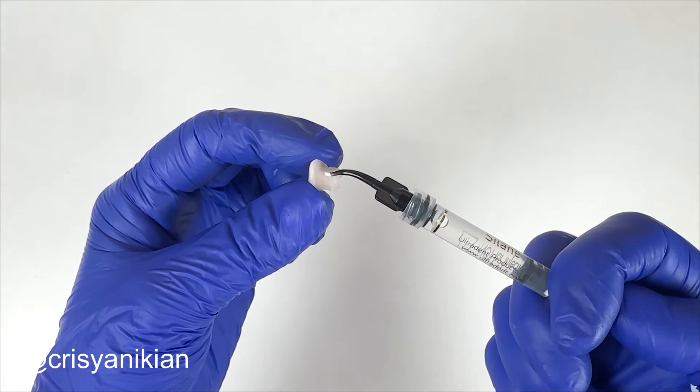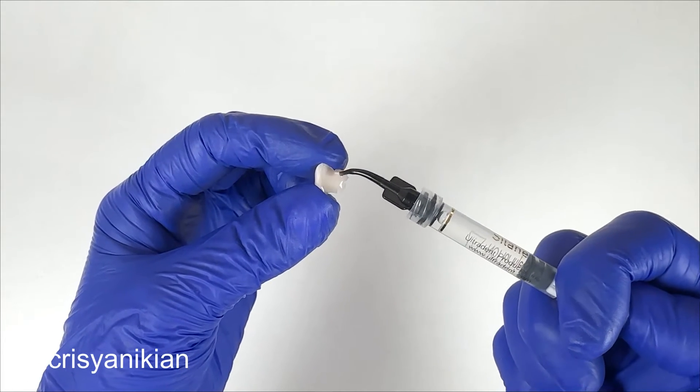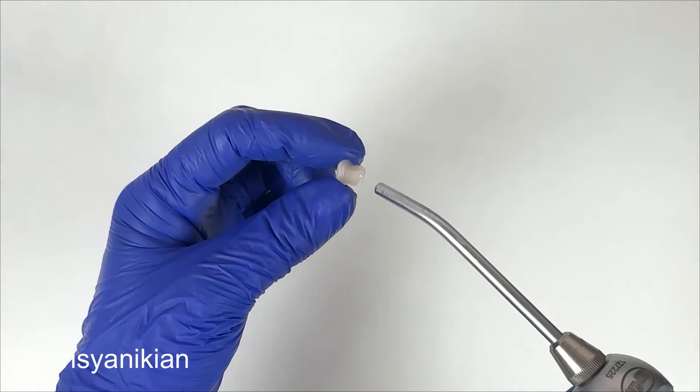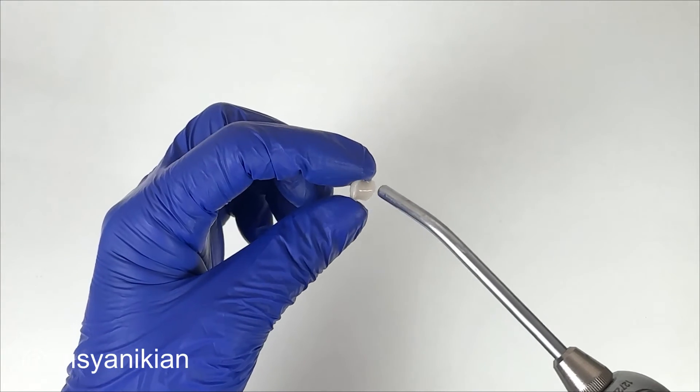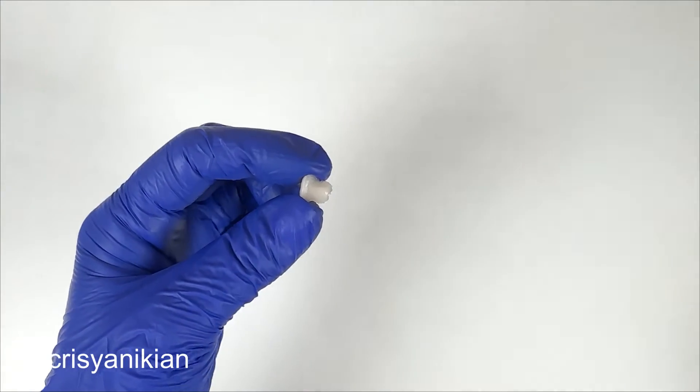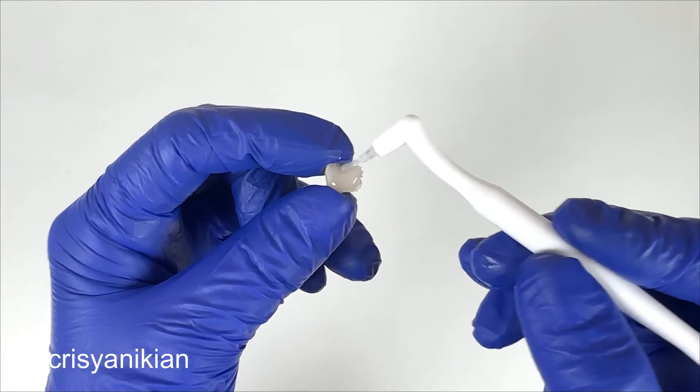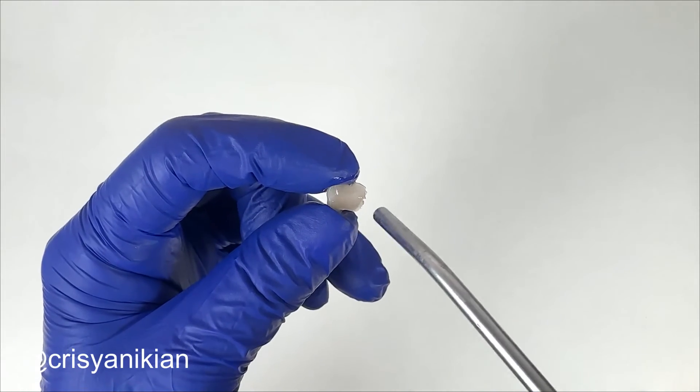Apply hydrolyzed silane or a universal adhesive containing silane to the onlay's internal surface. Rub it well, blow a light stream of air to evaporate the solvent, and let the silane act for five minutes. Then apply the adhesive system on the silane, rubbing it well and blow air to evaporate the solvent. Do not cure the adhesive layer.